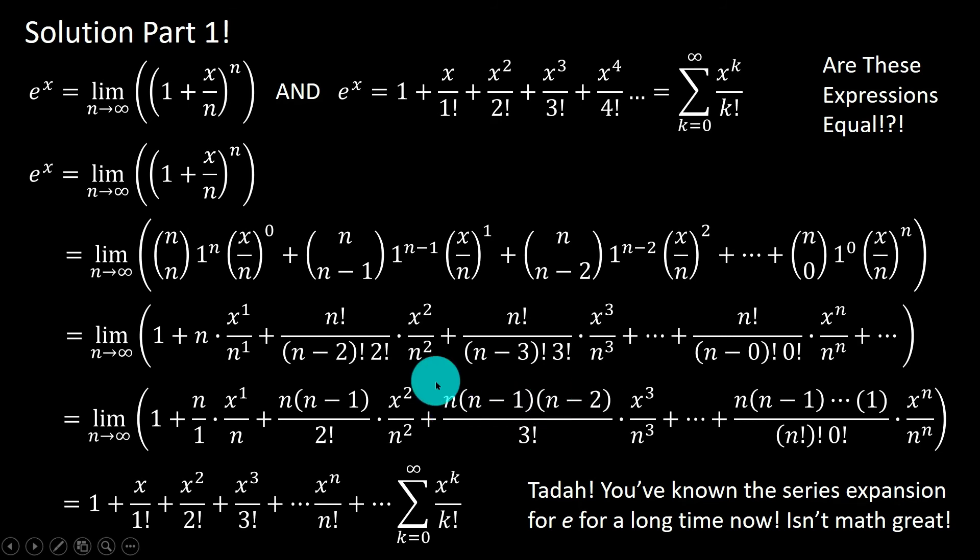Likewise, the largest degree term of this expansion is n cubed. And that n cubed divided by this n cubed, as n approaches infinity, will become 1. We ignore all the lower degree terms. And what's left is x cubed over 3 factorial.